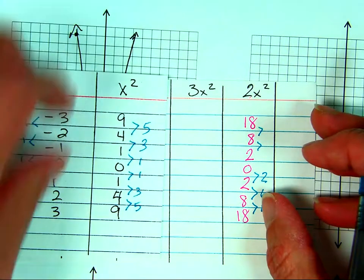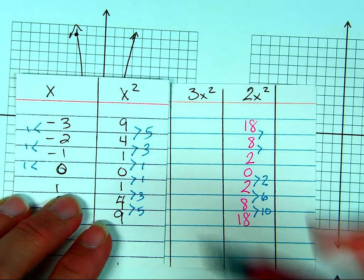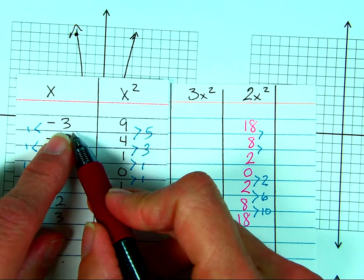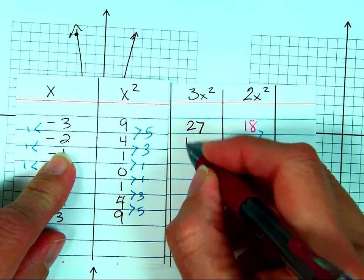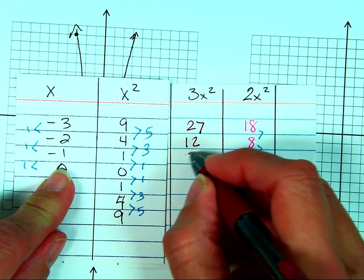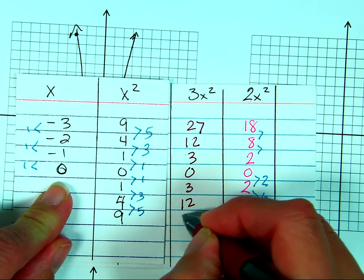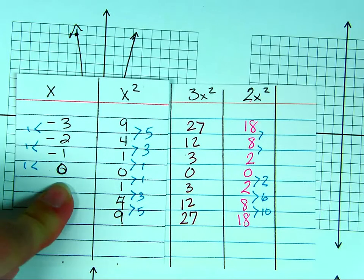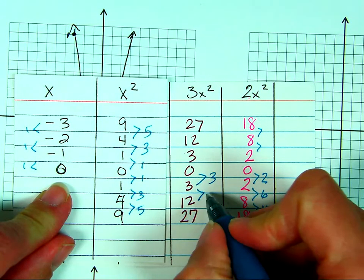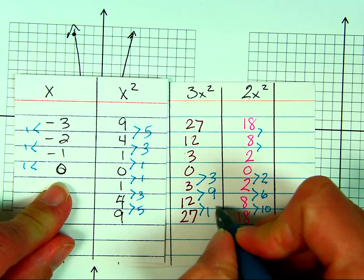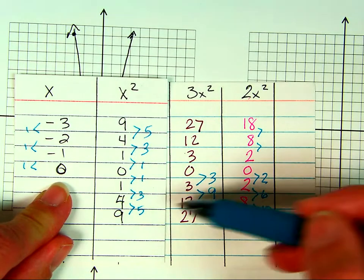What would happen if it was 3x squared? For 3x squared: 3 squared is 9, times 3 is 27. Then 4 times 3 is 12, and 1 times 3 is 3, and 0 times 3 is 0. Because of the axis of symmetry, it goes the same way. The pattern is up 3, then up 9, then up 15. How does that compare with 1, 3, 5? Well, 1 times 3, 3 times 3, 5 times 3.